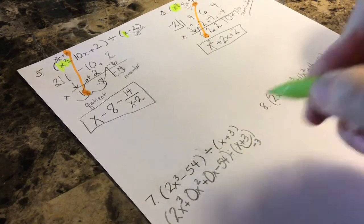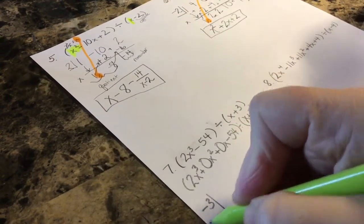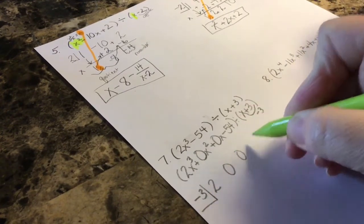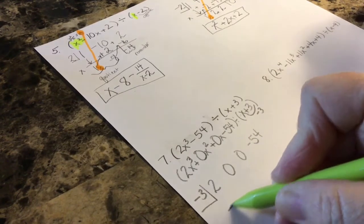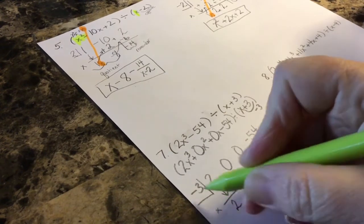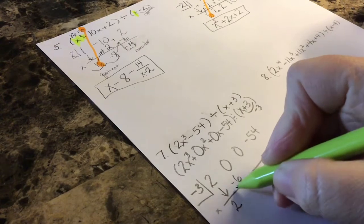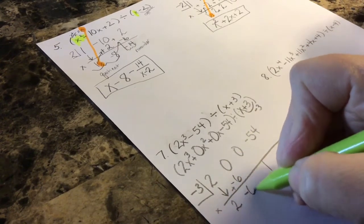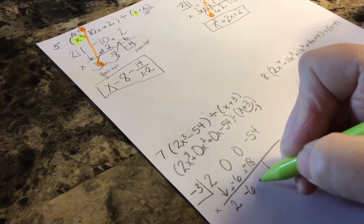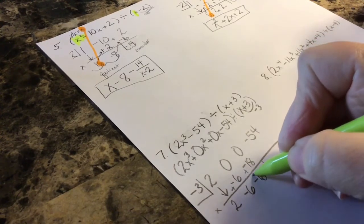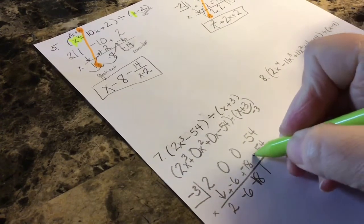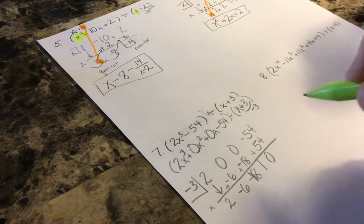The constant I need is negative 3. It goes here. Bring down all my coefficients and my constant: 2, 0, 0, negative 54. Draw a line. Bring down your 2. Multiply. Negative 3 times 2, negative 6. Add. 0 plus negative 6, negative 6. Multiply. 3 times negative 6, negative 18. Add. 0 plus negative 18, negative 18. Multiply. Negative 3 times negative 18 is positive 54. Add. And there's a 0 remainder again.